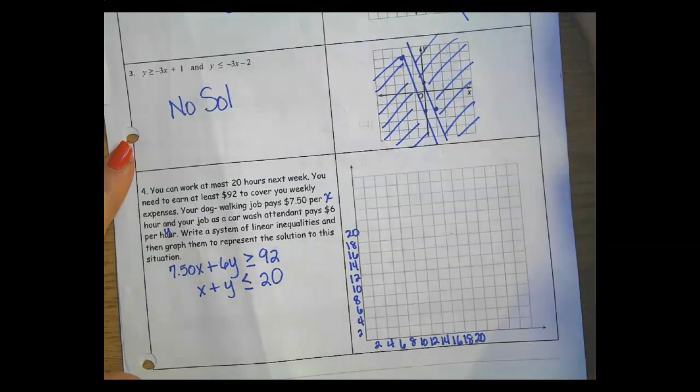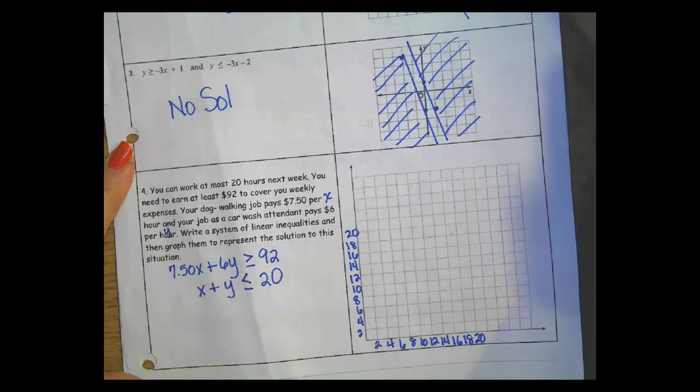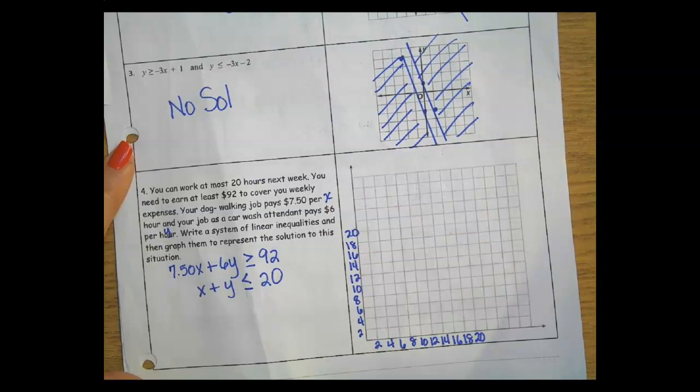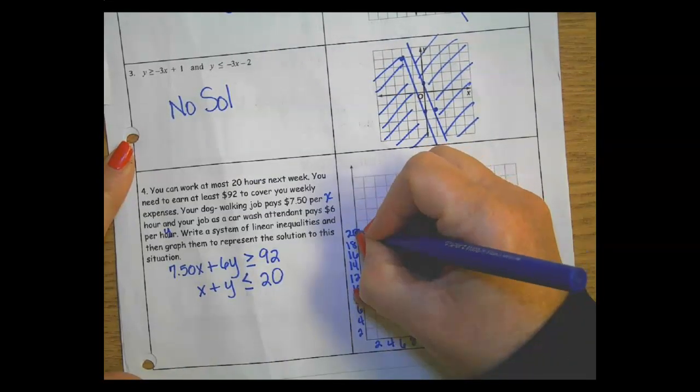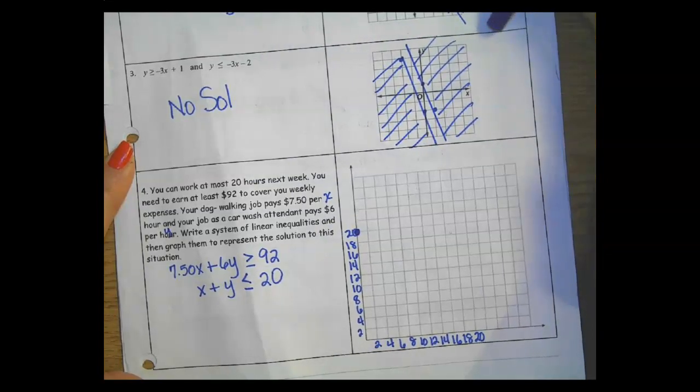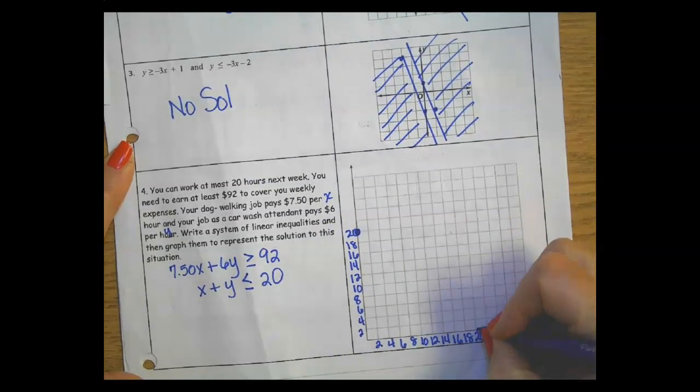If I look at my graph, I see that I am on the 20 on the y, so right on 20 on the y. I'm going to put a dot here.